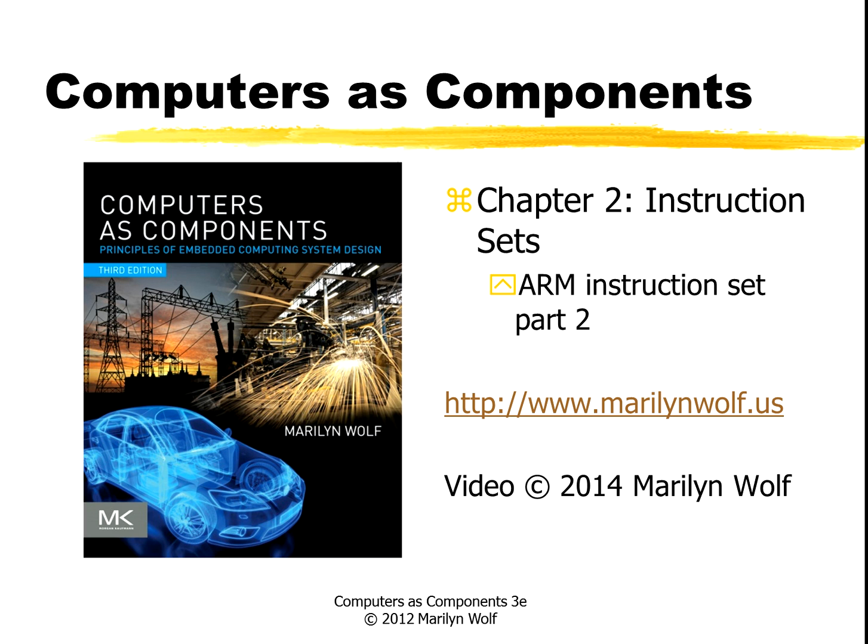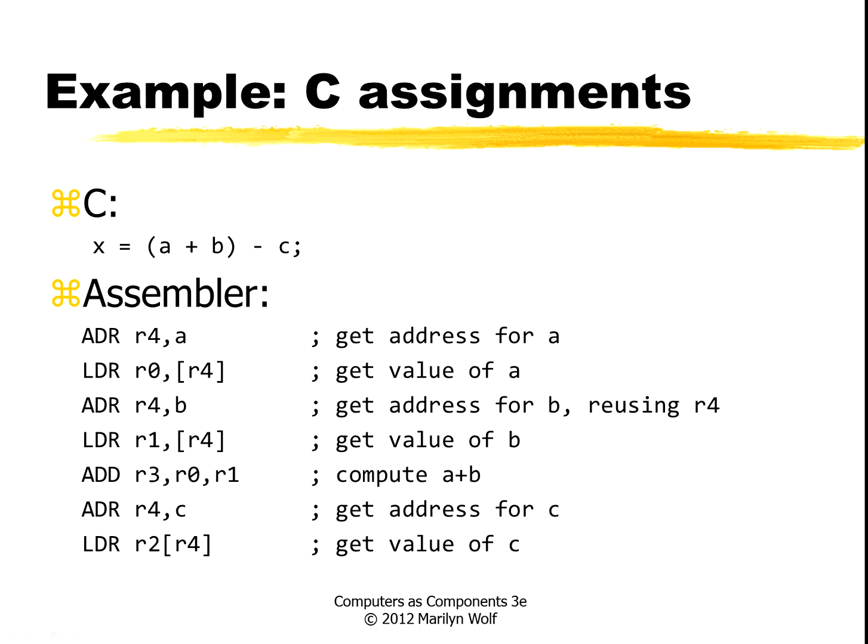Let's finish up our discussion of the ARM instruction set. Here's an example of some assembly code for a C assignment statement. Here's the assignment statement: x gets a plus b minus c.